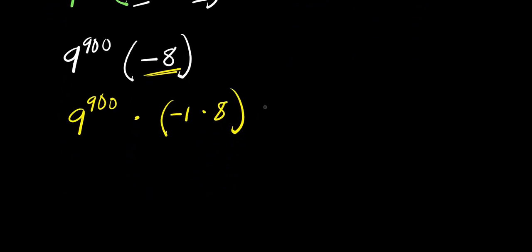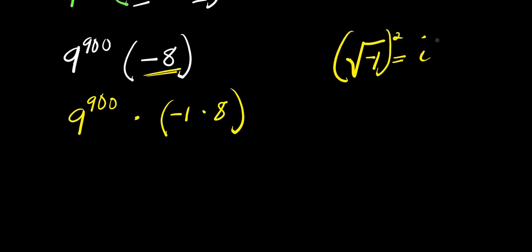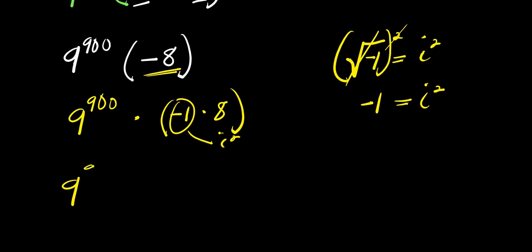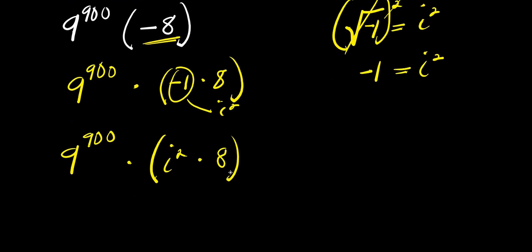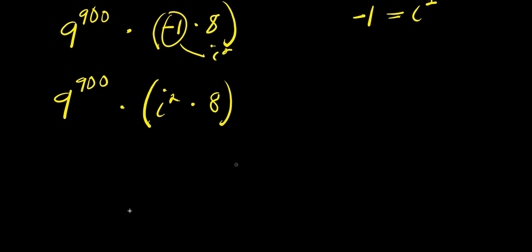Now I recall the identity that the square root of negative 1 equals i. So if I square both sides, negative 1 equals i squared. Applying this, I can write 9 to the power of 900 times i^2 times i^2 times i^2 times i^2 times 8.